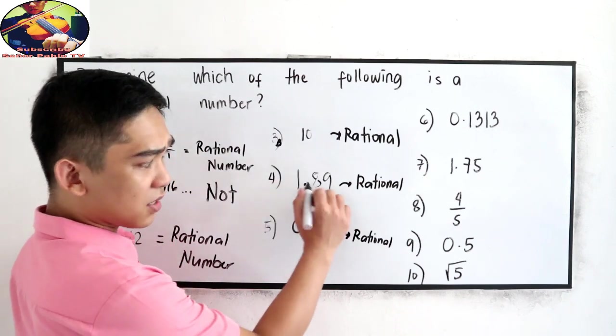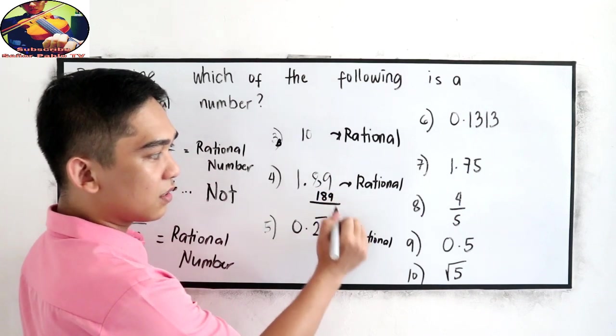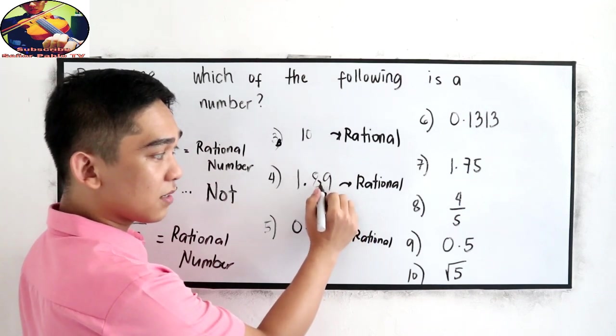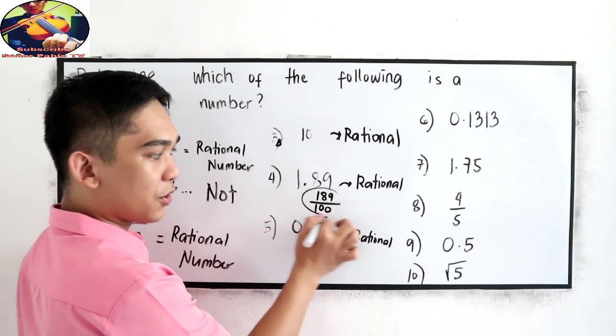Number 4, this can be written as 1, 8, 9 over how many decimal places? 1, 2. So, 2 zeros. This will be the rational form.